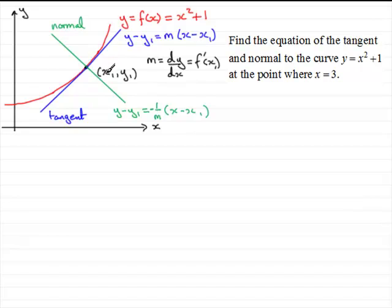Our point x1, y1, well, we know the x1 coordinate is 3. We need to find out what the corresponding y coordinate would be. When x equals 3, we can find out what the y coordinate would be by substituting 3 into the curve. We'd have 3 squared plus 1. 3 squared is 9, 9 and 1 is 10. So we've got our coordinates of 3 and 10. This point now is 3, 10.